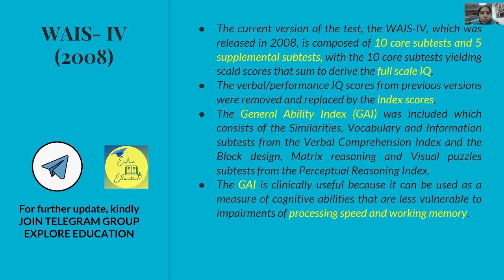The latest version, WAIS-4, was released in 2008. It is composed of 10 core subtests and 5 supplemental subtests. The Full Scale IQ is derived only from the 10 core subtests — the 5 supplemental subtests are not counted in the IQ score.